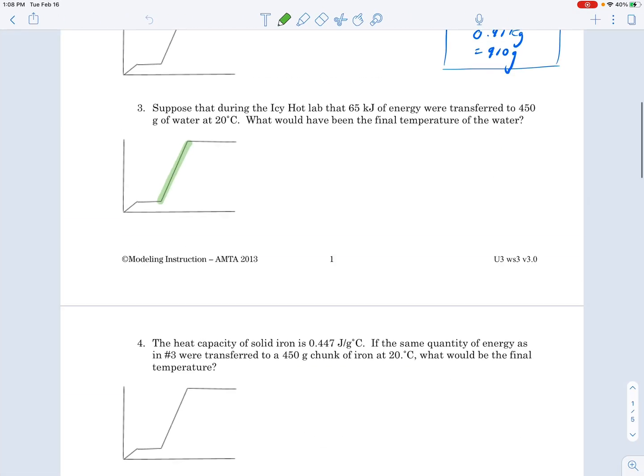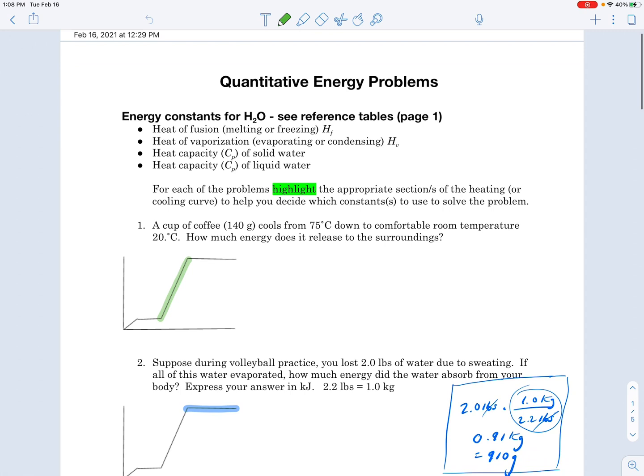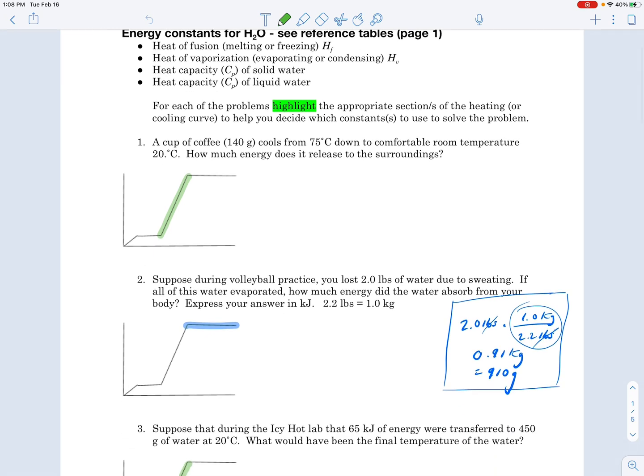Let's look at the first problem. A cup of coffee cools from 75 degrees Celsius down to a comfortable room temperature, 20 degrees Celsius. How much energy does it release to the surroundings? I've already highlighted the part of the heating curve we're dealing with - that's the liquid part. The water is going to cool down from 75 to 20 degrees Celsius. We're definitely dealing with that part because the bottom plateau is at zero and the top plateau is at 100.